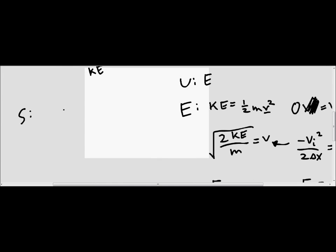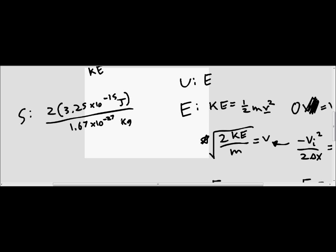For our substitution we're going to start by substituting in the values to find the velocity. We've got the square root of two times the kinetic energy, which is 3.25 times 10 to the negative 15 joules, over the mass, which is 1.67 times 10 to the negative 27 kilograms. When you solve that we end up with 1.97 times 10 to the 6 meters per second.